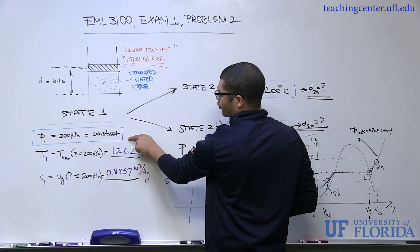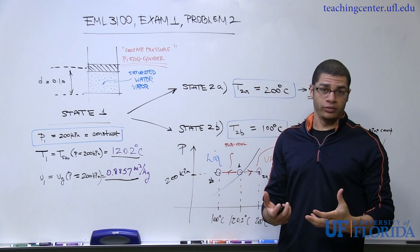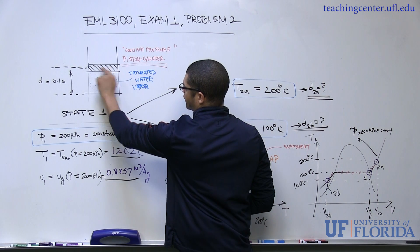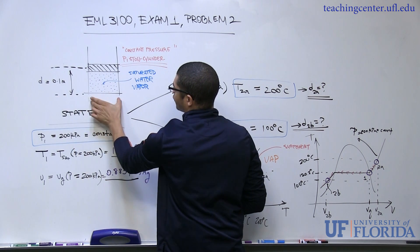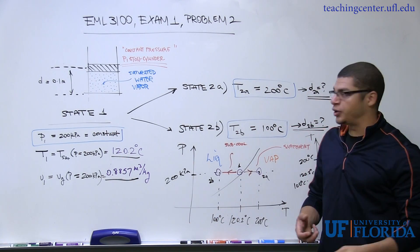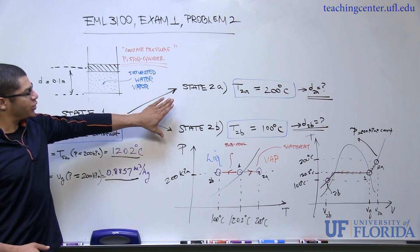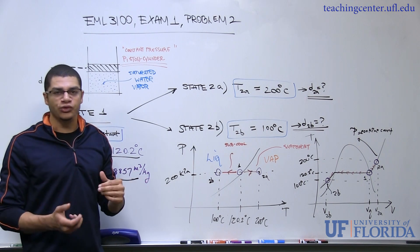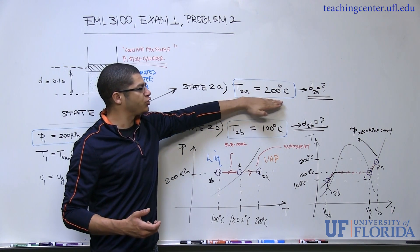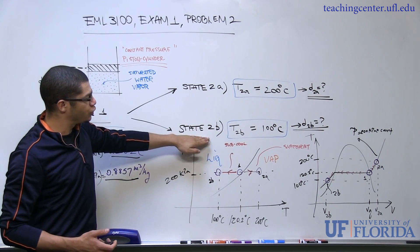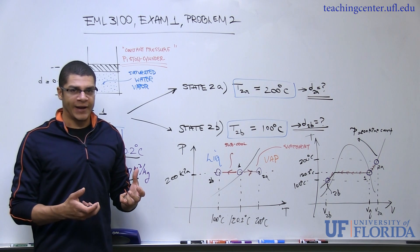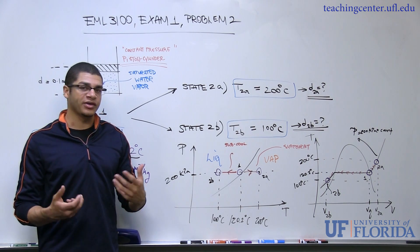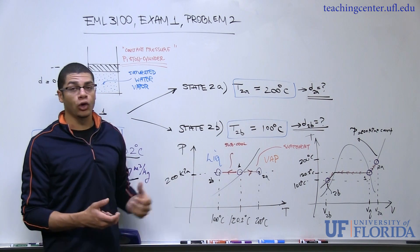In this initial state we know that we're at 200 kPa, and we're also given that the water — it's water vapor — exists in its saturated vapor state. In this equilibrium position the piston is at a distance of 0.1 meters from the datum line at the very bottom of the cylinder. We're also given that after some process, we'll go to one of two states: either 200 degrees centigrade or 100 degrees centigrade. The temperature corresponding to state one is not given and must be found.